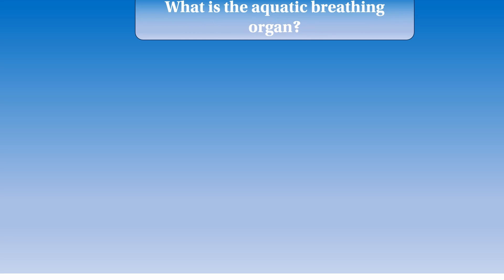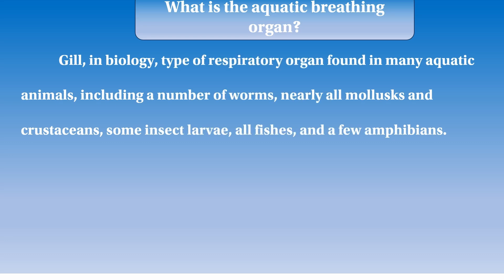What is the aquatic breathing organ? The aquatic breathing organ is used for breathing. In biology, types of respiratory organs are found in many aquatic animals, including a number of worms, nearly all molluscs and crustaceans, some insect larvae, all fishes, and some amphibians.